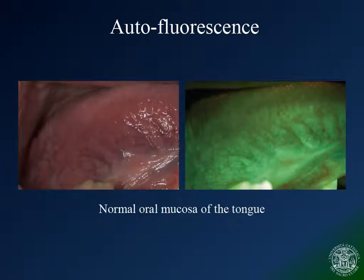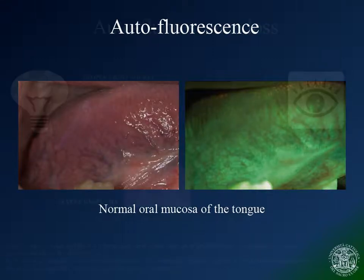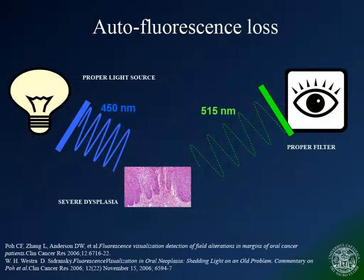Here is an example of autofluorescence of the normal mucosa of the tongue. Conversely, tissues with disorders of the cell metabolism, such as dysplastic or anaplastic mucosa, appear as dark spots on a green background.